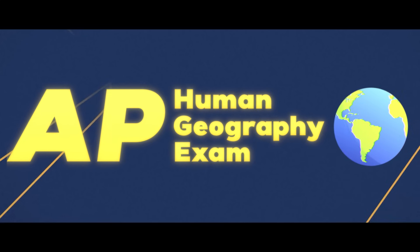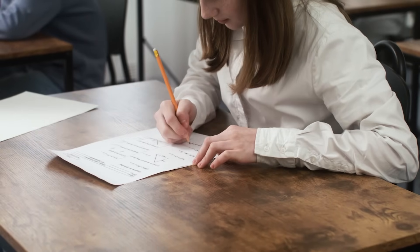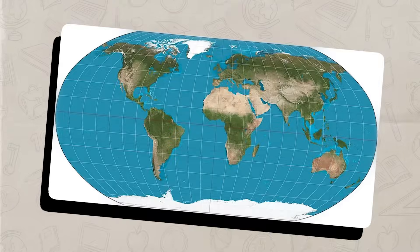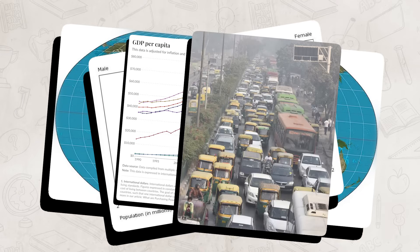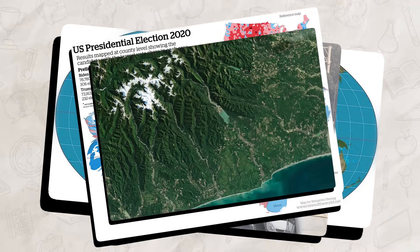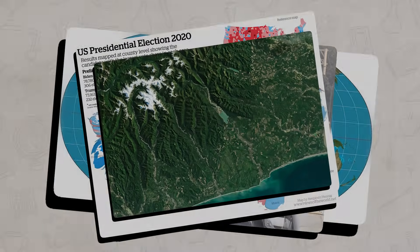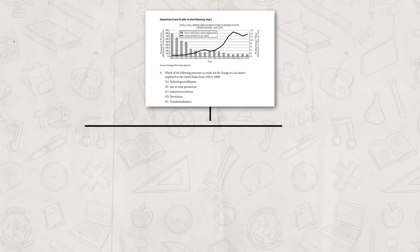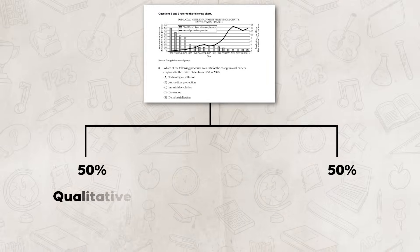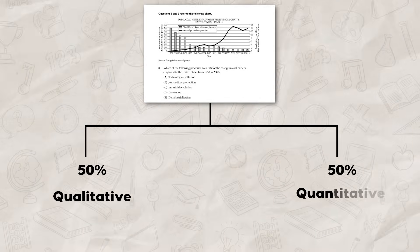For the AP Human Geography exam, you need to be prepared to answer questions that include reference maps, tables, charts, graphs, images, infographics, and landscapes. These are the most common stimuli used on the National Exam. College Board has also let us know that those stimulus questions will be evenly split between qualitative and quantitative sources, so make sure that you are familiar with both sets of data.